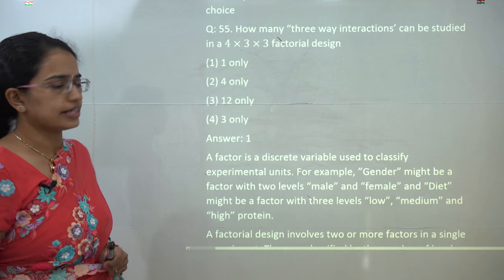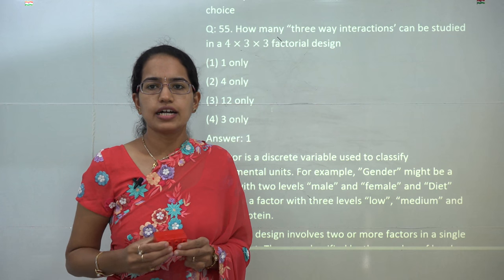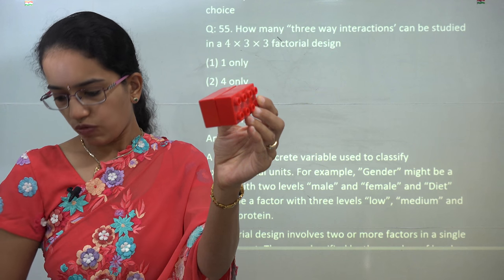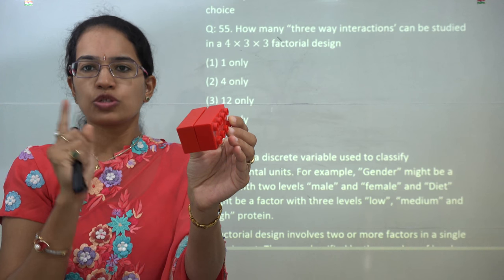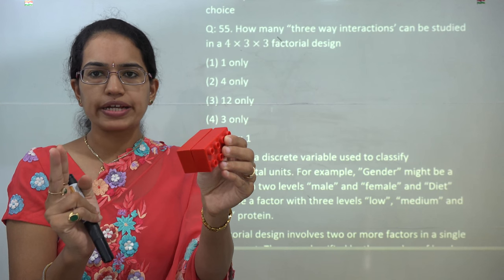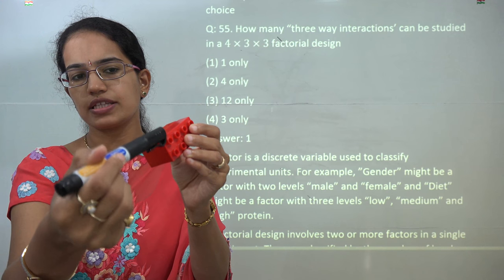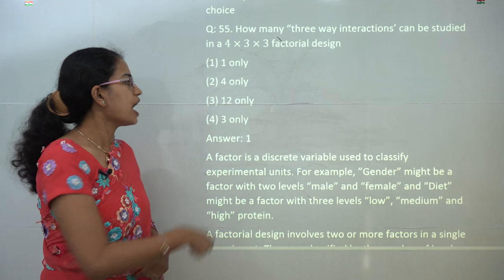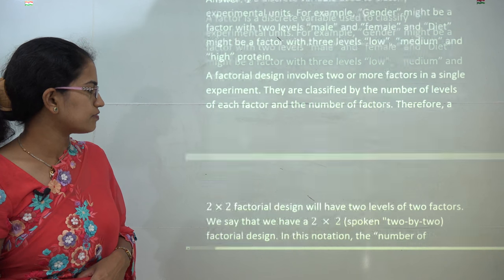Now coming on to the next question, you have to understand the three-way interaction. The best way that I can explain this three-way interaction is consider this to be a cube. Now if I am talking about a three-way interaction, if you can see here, what would be the three-way interaction? 1, 2, and 3—so these three ways would be the axes. So there can be only one possible three-way interaction. If I am talking about a two-way interaction, it can be between this and this, between this and this, and between this and this. So how many possible two-way interactions? There can be three possible two-way interactions and only one possible three-way interaction. So for this, the correct answer would be 1. For the detailed explanation, you can refer to the content.